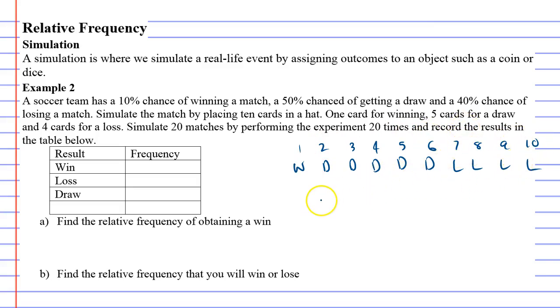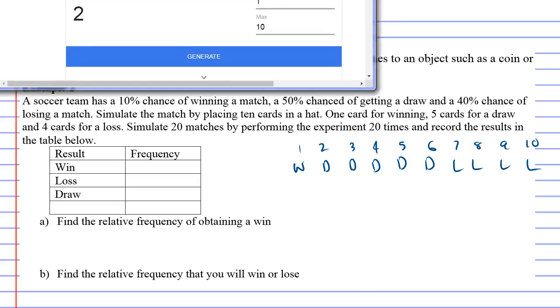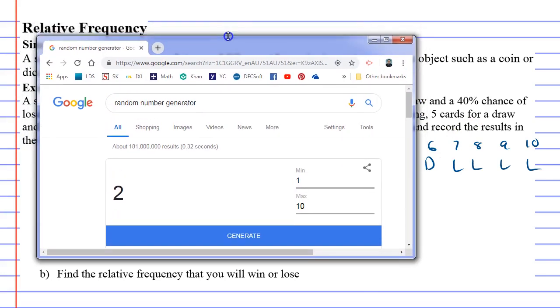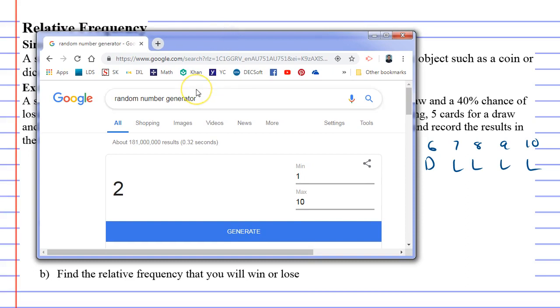This is how we're going to do our simulation. So how are we going to get these numbers from 1 to 10? Well, on Google there is a thing called a random number generator, and what it does is generate a random number from 1 to 10 for you. So we'll start by generating it.